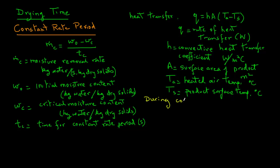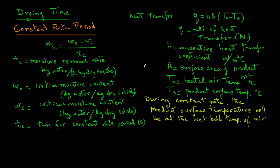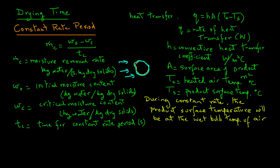Note that during the constant rate period, the product surface will remain at the wet bulb temperature of the air. That is because as this moist sample is placed in the air, there is always a film of water present on the surface of the sample throughout the constant rate period. This is similar to how wet bulb temperature was defined in our psychrometrics tutorial. Water can very easily transfer from the inside to the outside surface, so the surface temperature of the product equals the wet bulb temperature of the air.